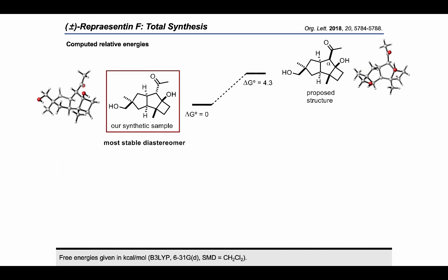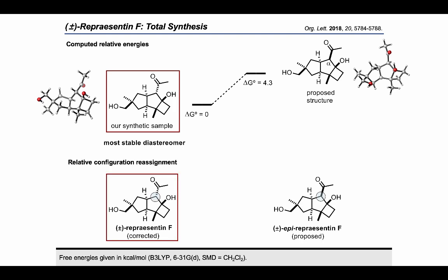DFT calculations were performed which supported our synthetic sample of representin F as the most stable epimer by 4.3 kcal per mol. All these evidences point towards a misassignment of the initially proposed structure for representin F. Its corrected structure, supported by substantial data, is as depicted in this slide.